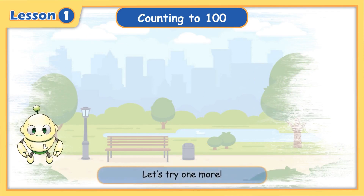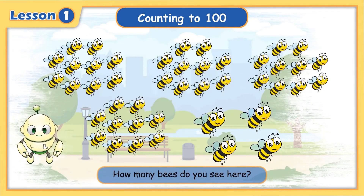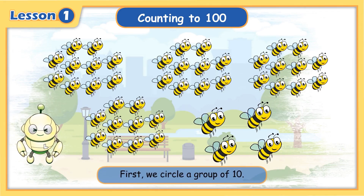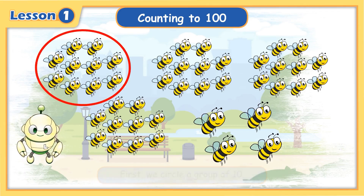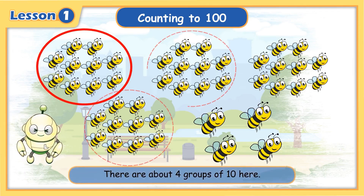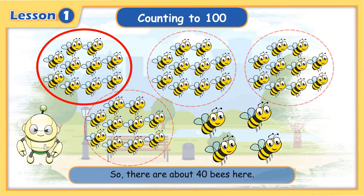Let's try one more. How many bees do you see here? First, we circle a group of 10. There are about 4 groups of 10 here. So, there are about 40 bees here.